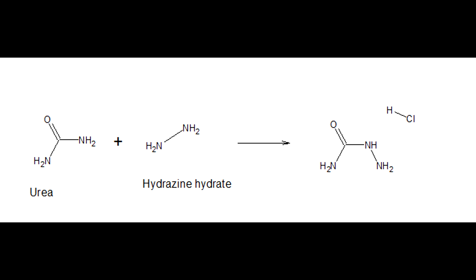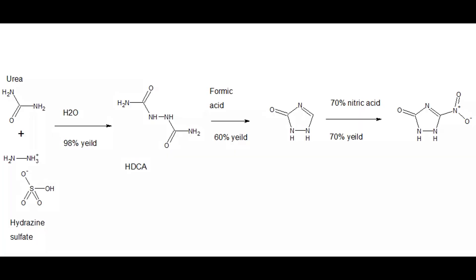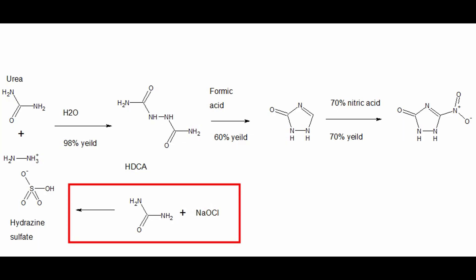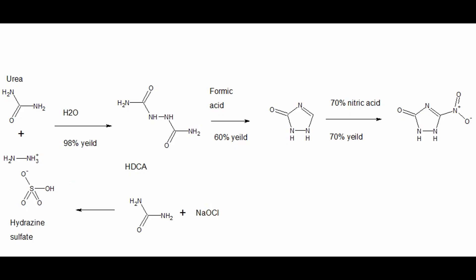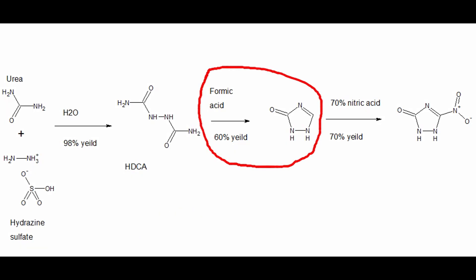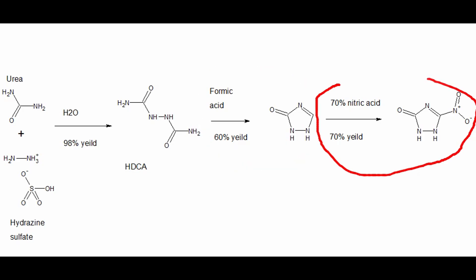I'm going to take a different path. First, hydrazotic carbonamide (HDCA) is synthesized from urea and hydrazine sulfate. This reaction is very efficient and yields up to 98%. Given that hydrazine sulfate itself can be obtained from urea and sodium hypochlorite, the entire synthesis could practically be carried out using readily available materials. The subsequent stages are the same as in the industrial method: cyclization with formic acid and nitration. So, let's start.